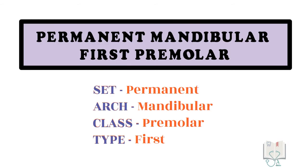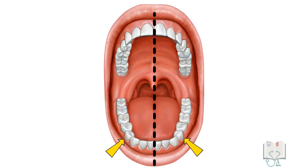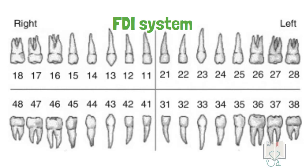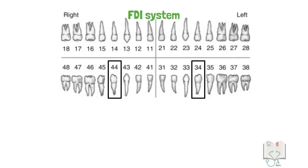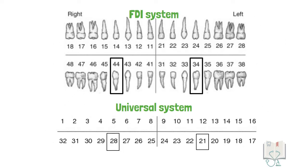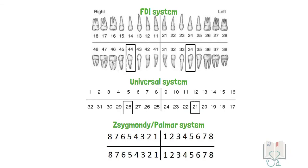The permanent mandibular first premolar is the fourth tooth from the midline. The tooth number in the FDI system is 34 and 44, in the Universal system 21 and 28, and in the Zsigmondy-Palmer system it is 4 with the appropriate quadrant brackets.